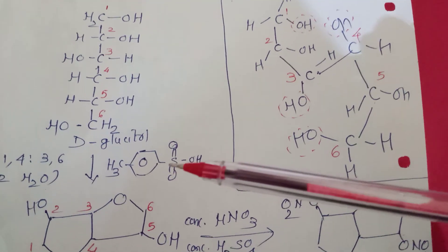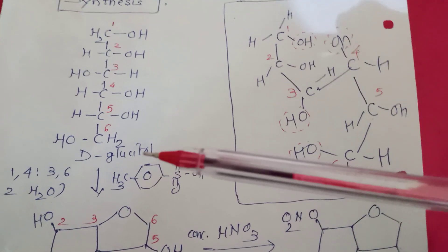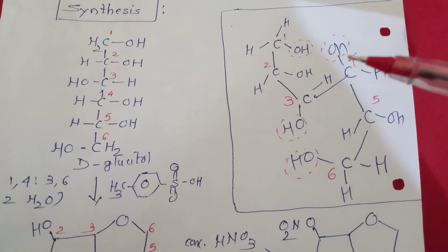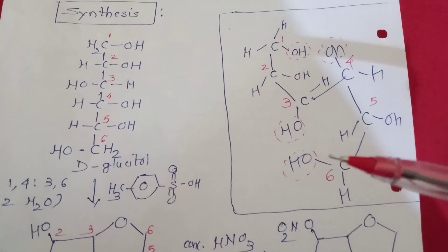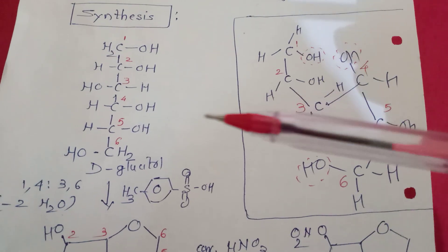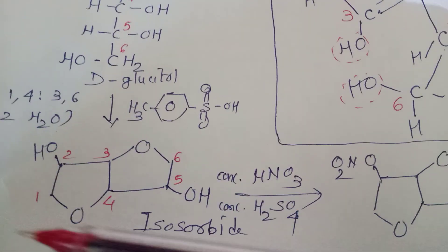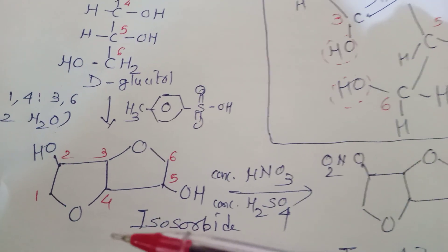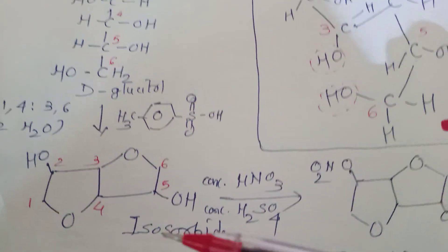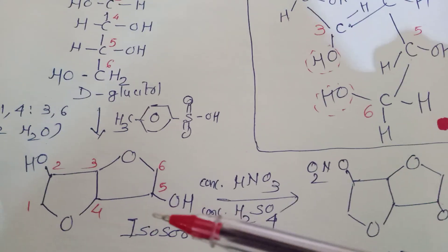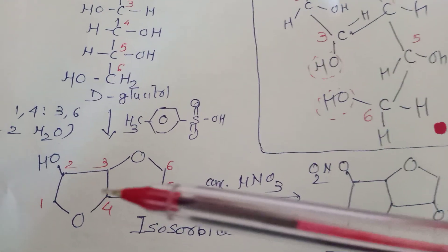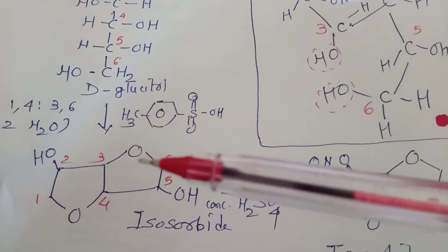The first and the fourth hydroxy groups and the third and the sixth hydroxy groups react to release two water molecules. The cyclization takes place. This results in the formation of isosorbite. Here you can easily find that two five-membered oxygen-containing rings joined with each other having two hydroxy groups at position number two and at position number five.